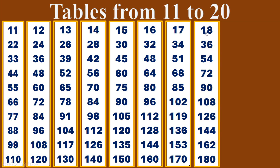Eighteen times table. Eighteen ones are eighteen. Eighteen twos are thirty-six. Eighteen threes are fifty-four. Eighteen fours are seventy-two. Eighteen fives are ninety. Eighteen sixes are one hundred and eight. Eighteen sevens are one hundred and twenty-six. Eighteen eights are one hundred and forty-four. Eighteen nines are one hundred and sixty-two. Eighteen tens are one hundred and eighty.